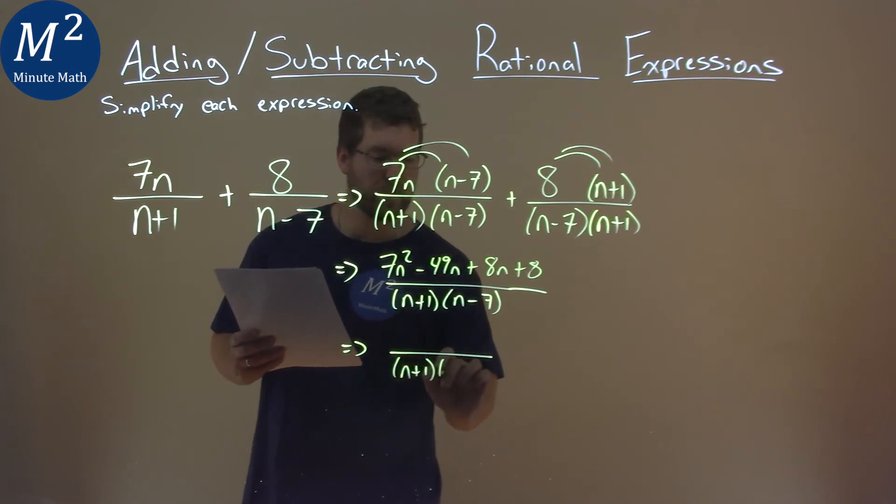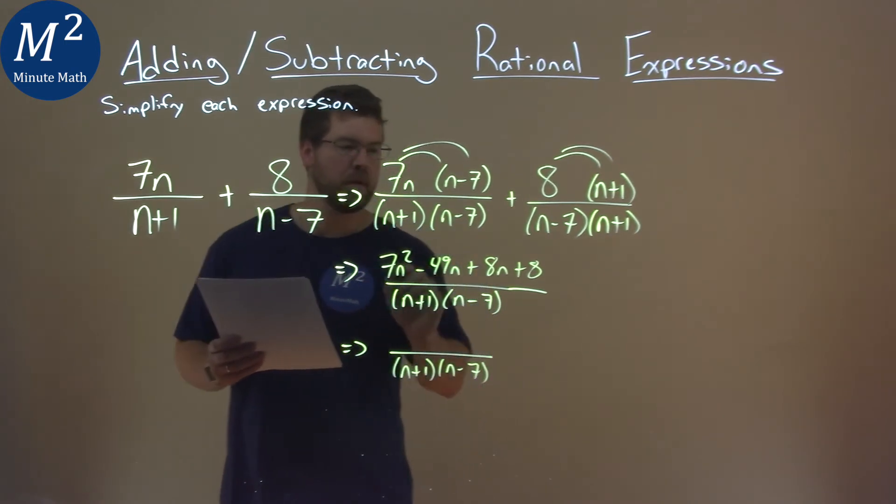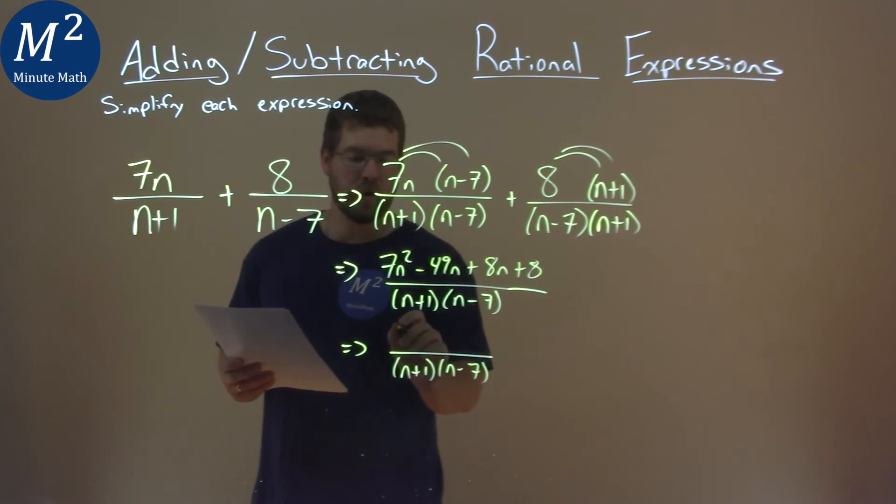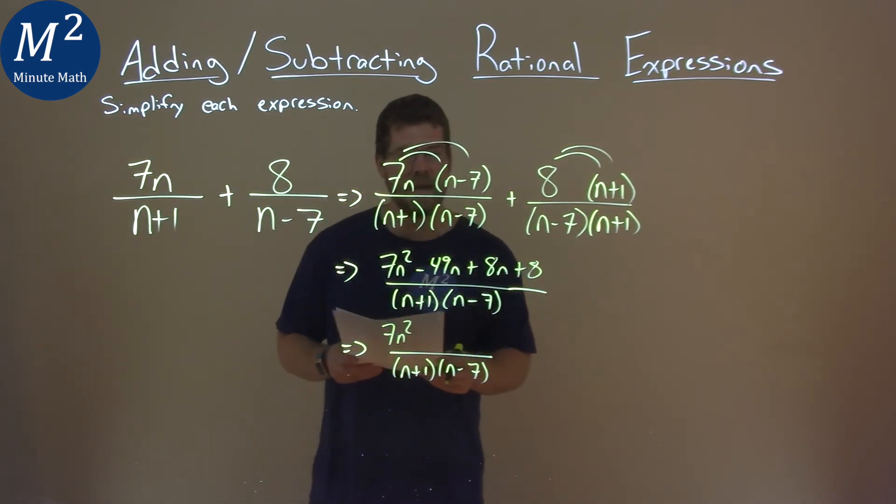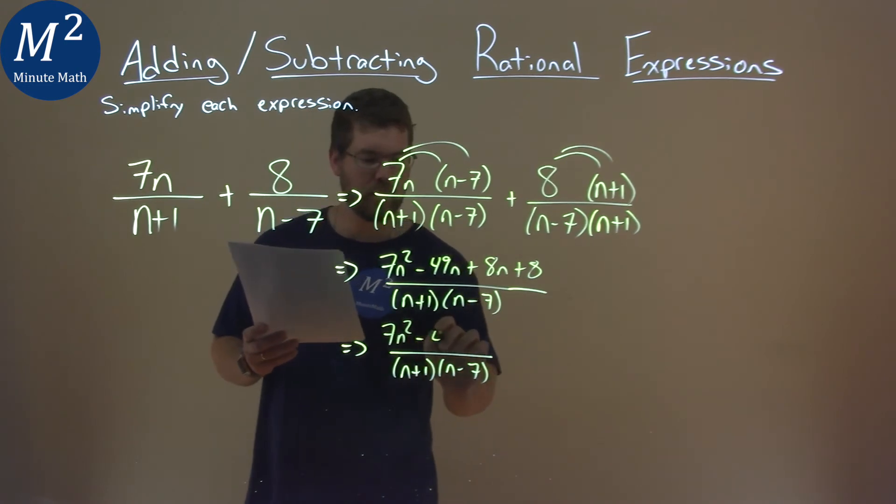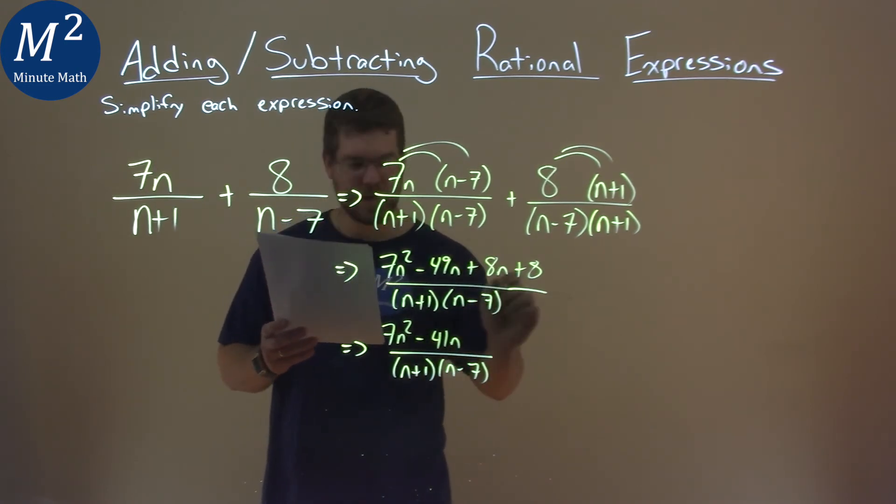So we have n plus 1, n minus 7 in the denominator. There's nothing else with the n squared, so we have 7n squared. We have a negative 49n plus 8n is a negative 41n, and we just bring down the 8.